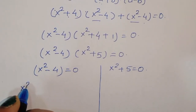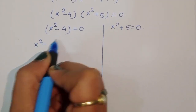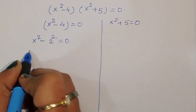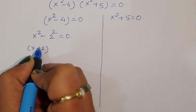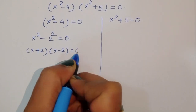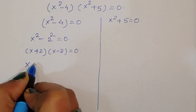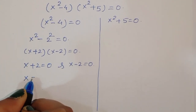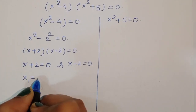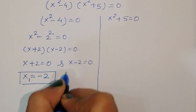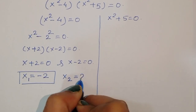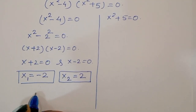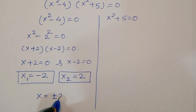For the first case, x square minus 4 is equal to 0, which is x square minus 2 square is equal to 0. Using the formula a square minus b square equals a plus b times a minus b, we get x plus 2 times x minus 2 is equal to 0. Therefore x plus 2 is equal to 0 or x minus 2 is equal to 0, giving x1 is equal to minus 2 and x2 is equal to 2, so x is equal to plus or minus 2.